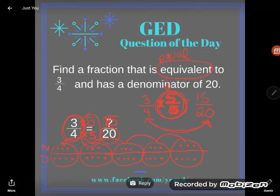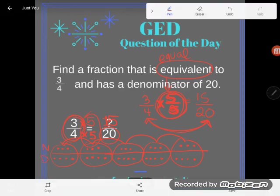Therefore, I was able to raise this fraction without changing its value. Therefore, three-fourths is equivalent to 15 twentieths. Hope that made sense to you. Tune in for more tricks with fractions in the coming days. If you have any questions about this or any other GED math topic, be sure to drop it in the comments and I'll do my best to answer.